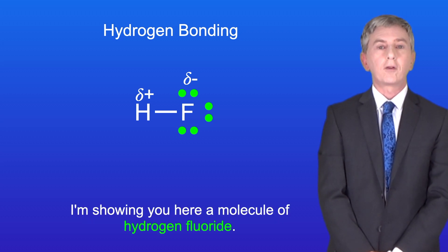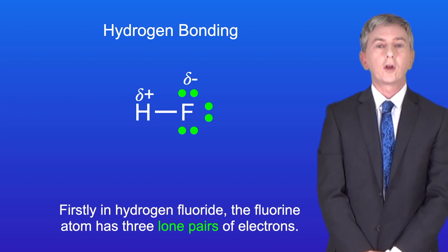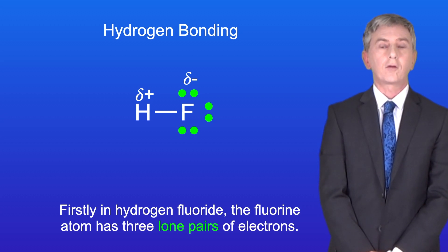I'm showing you here a molecule of hydrogen fluoride. Now, there are two key points to this molecule. Firstly, in hydrogen fluoride, the fluorine atom has three lone pairs of electrons.